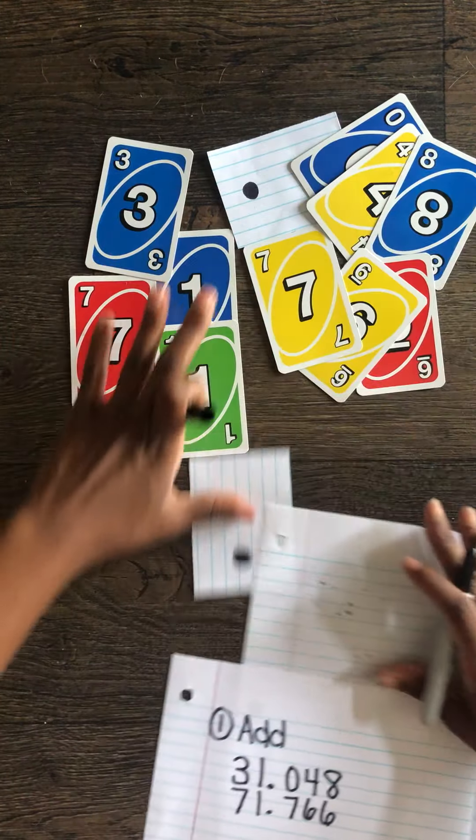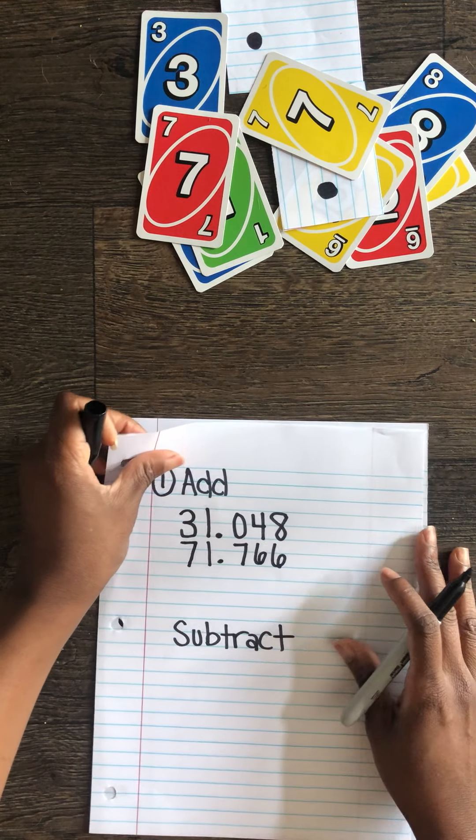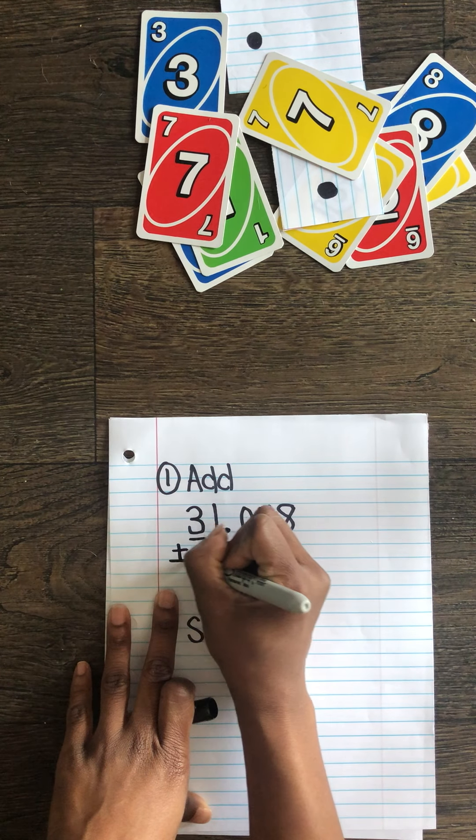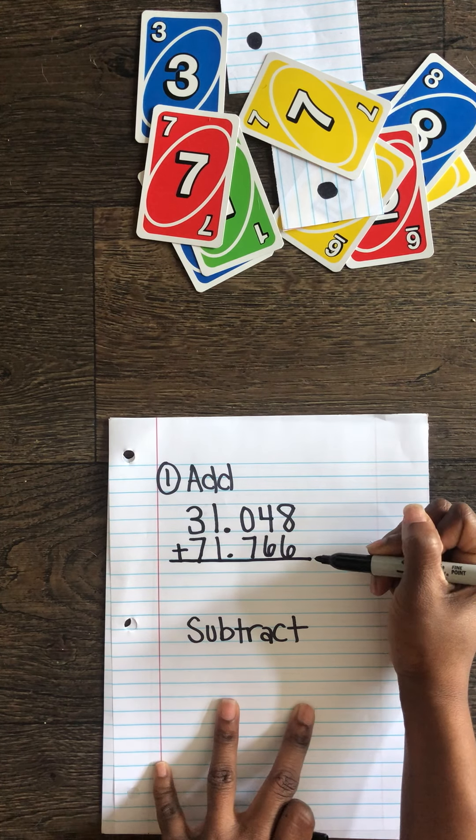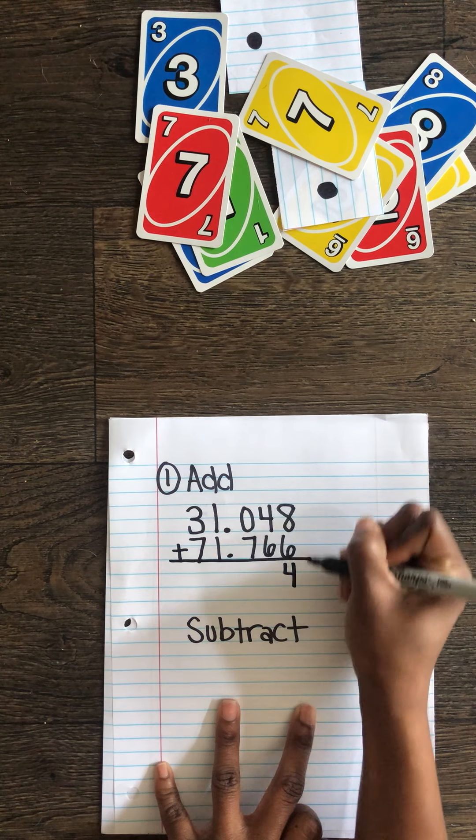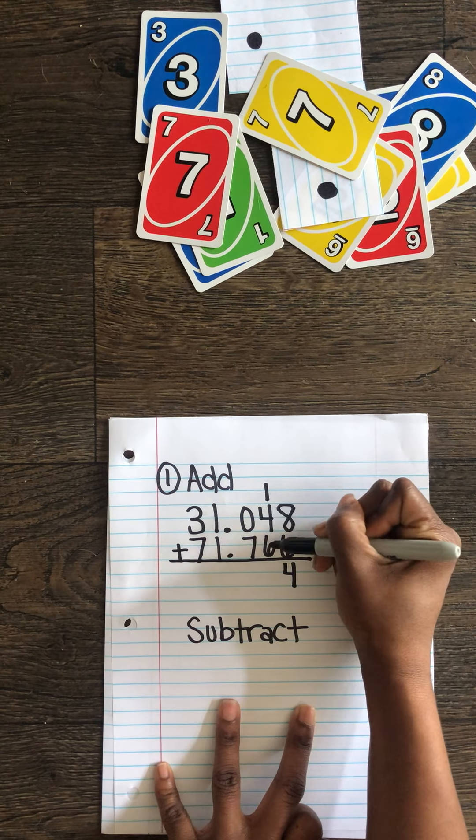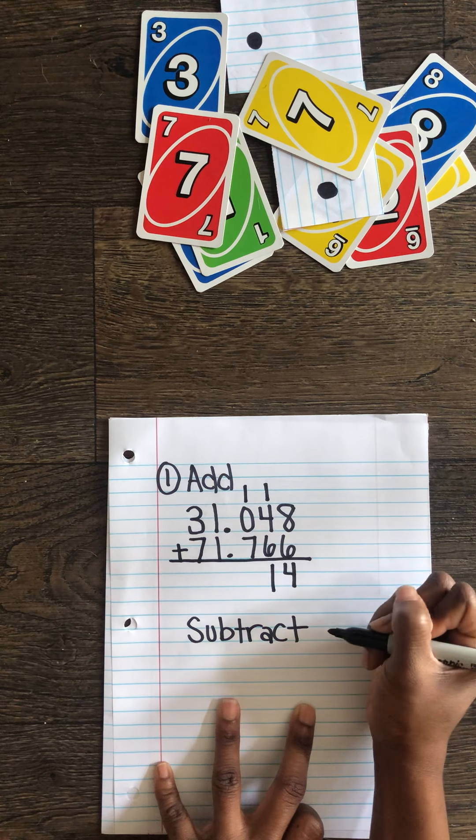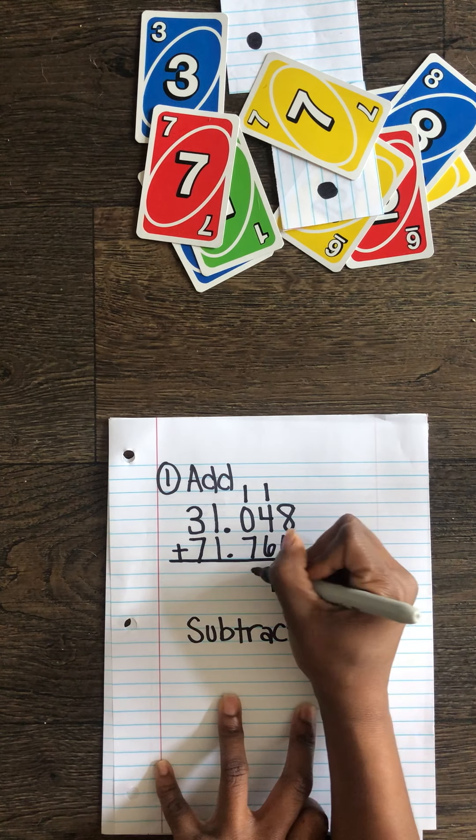Once you have your numbers there you don't need those anymore. And we're gonna add those together. We start from the thousandths place. Eight plus six is fourteen. And we carry the one. Four plus six plus one is eleven. And we carry the one again. One plus zero plus seven is eight.